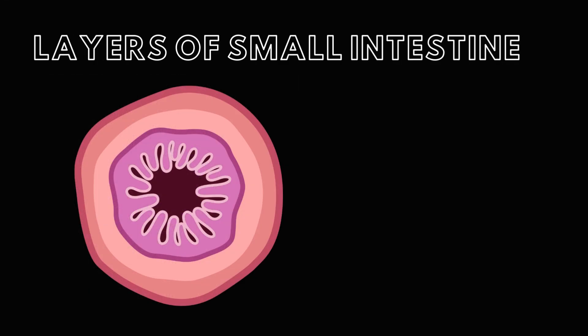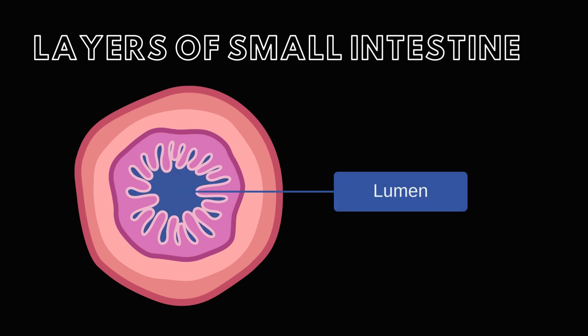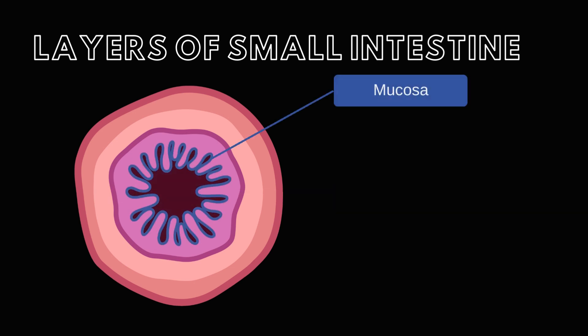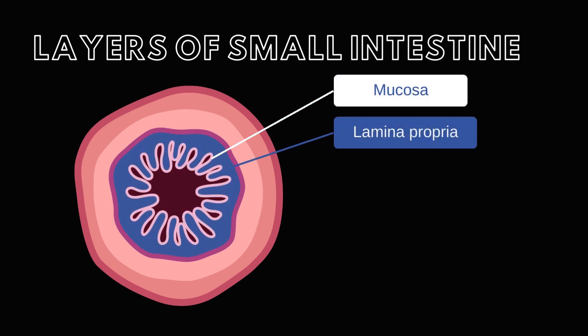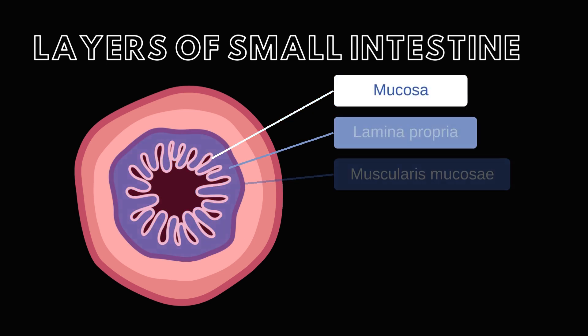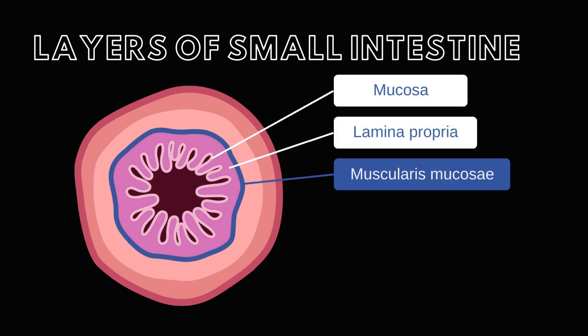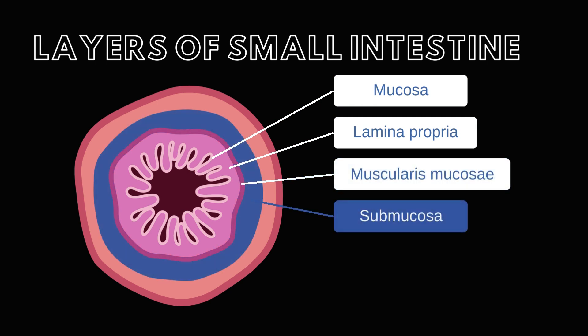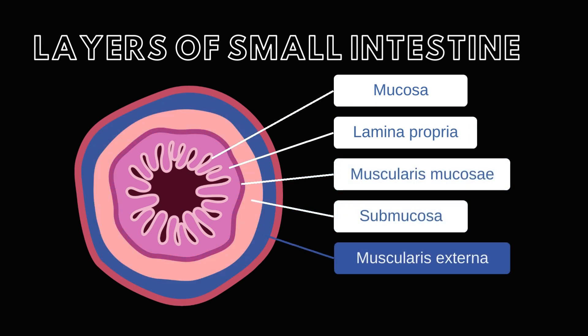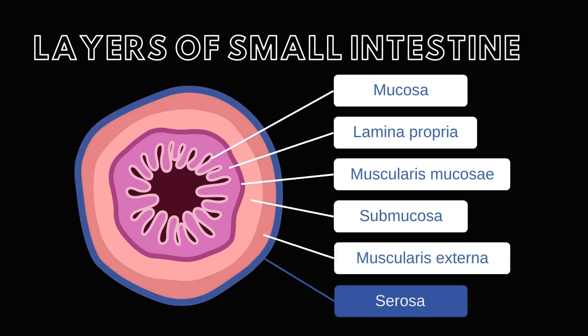Using the lumen of the small intestine as a point of reference and moving from superficial to deep, these layers are termed the mucosa, lamina propria, muscularis mucosa, submucosa, muscularis externa, and serosa.